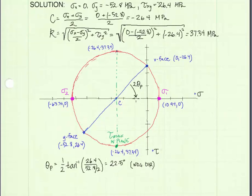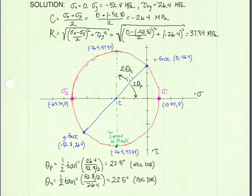If we want to move the x-face up to the maximum in-plane shear stress condition, we rotate it through angle 2 theta s. We can calculate theta s in a similar manner to theta p — it's actually the same right triangle. So 2 theta s is just 90 degrees minus 2 theta p, and theta s divided by 2 gives us 22.5 degrees also, going in the positive direction. You can see those two angles are 45 degrees apart.